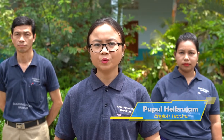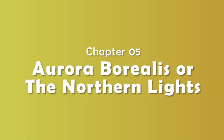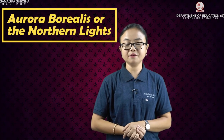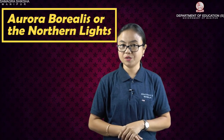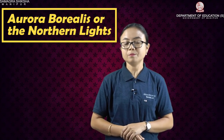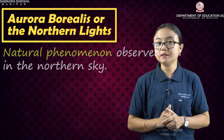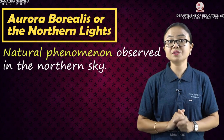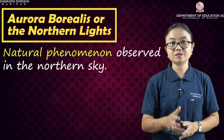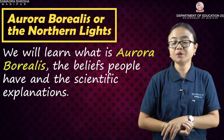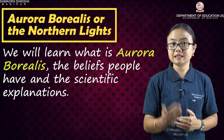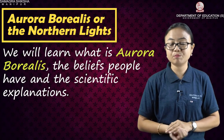Hello everyone, I am Pupul Haikruzam. I teach English for classes 9 and 10. Welcome to English class. Our class today is class 9 English course book text. We have taken up lesson number B from unit 2. Unit 2 is all about mystery and lesson number B has the title Aurora Borealis. We are going to learn about this natural phenomenon observed towards the North Pole. In our lesson, we are going to know what its meaning is, what people think it is, and what science has explained about it.